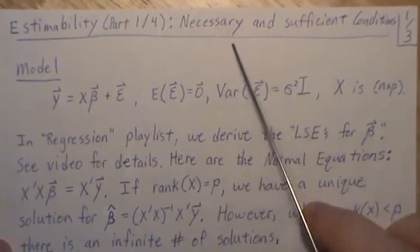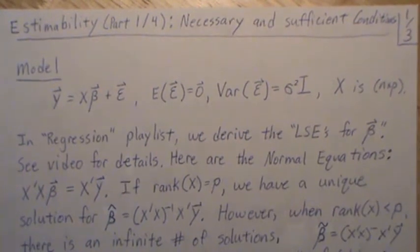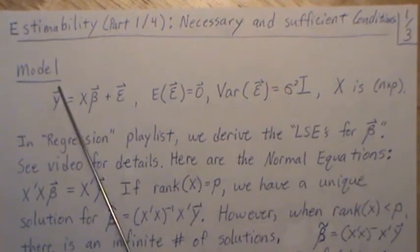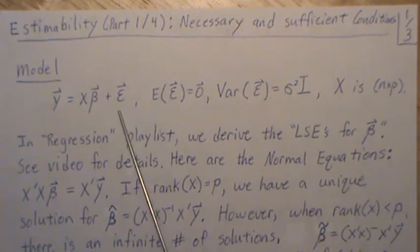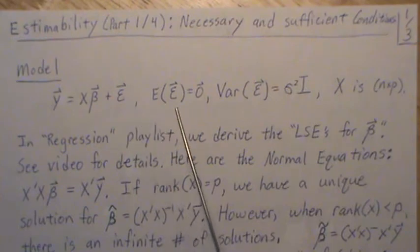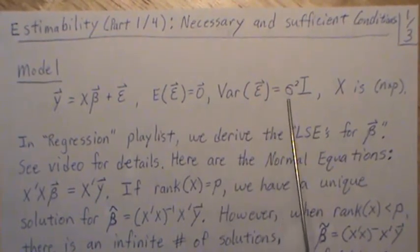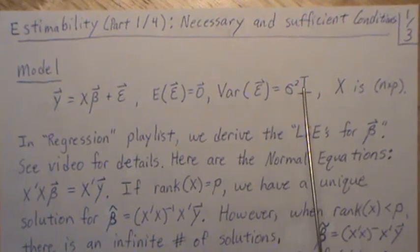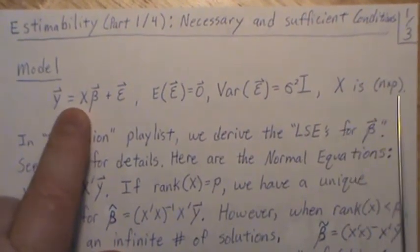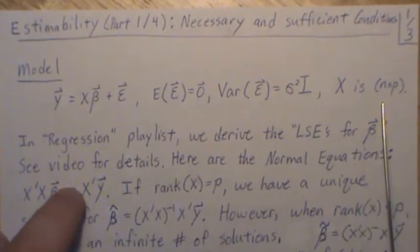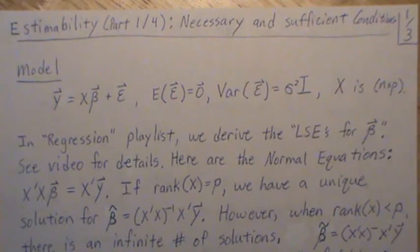In the first video, we're going to look at necessary and sufficient conditions for a function to be estimable. As a reminder, the setting is we have a model y equals x beta plus some error term, with the standard assumptions: the mean is zero, the variance is sigma squared, the covariances are zero. Here we're going to let the design matrix be n by p, so we have n observations and p parameters in the beta vector.